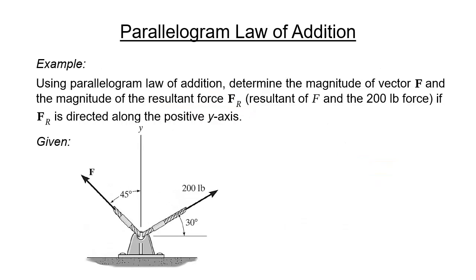For our example problem, using parallelogram law of addition, determine the magnitude of vector F and the magnitude of the resultant force, denoted as vector F sub R, which is the resultant of F and the 200 pound force, if vector F sub R is directed along the positive y-axis. Take note that the resultant force vector F sub R of vector F and the 200 pound force is directed along the y-axis.